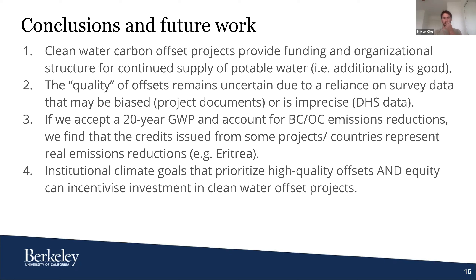Third, if we accept 20-year GWP values for greenhouse gas emissions and also account for black carbon emissions reductions, we find that credits issued from some projects in some countries represent real emissions reductions. Today I showed preliminary results for Eritrea, and the next steps are to apply this over- and under-crediting assessment to all projects currently issuing credits in Africa; we've requested baseline survey data from Gold Standard to help delineate the real baseline from the suppressed demand one. Finally, UC's approach to evaluating carbon offset quality shows how institutional climate goals that prioritize both high-quality offsets and equity can incentivize investment in projects like community boreholes that have very high societal benefit.